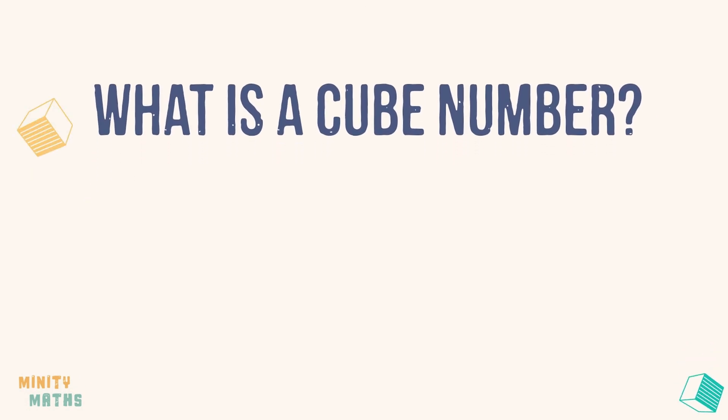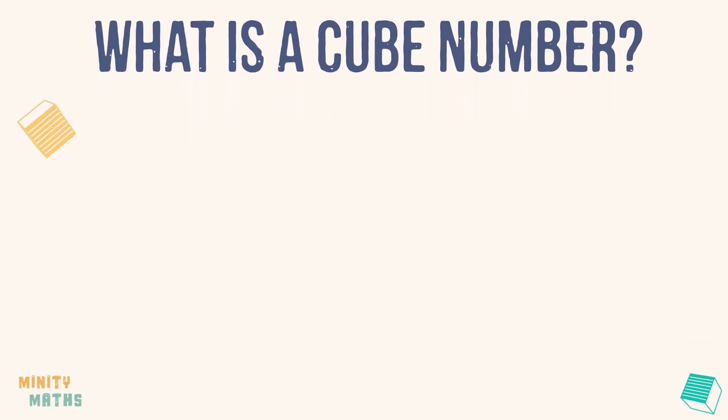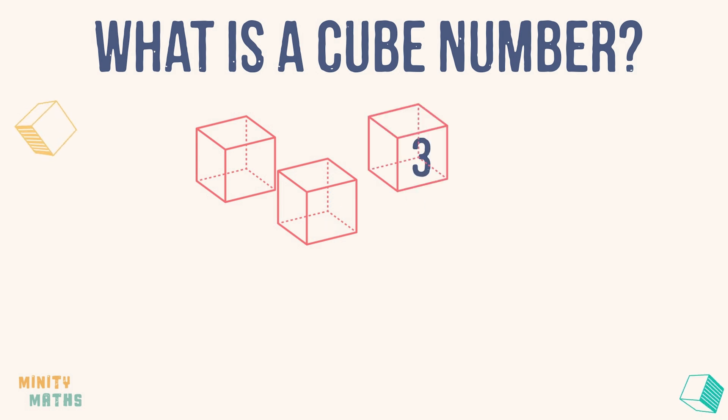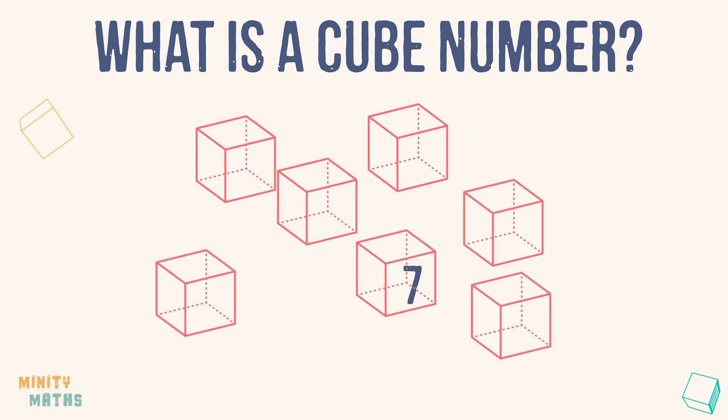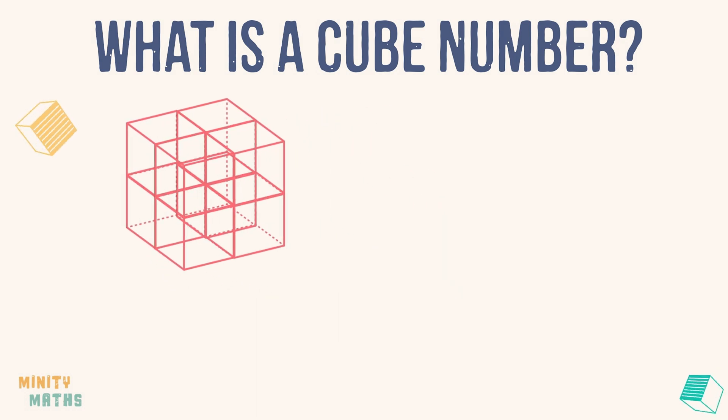A cube number is a number that can be made into a cube using that same number of smaller cubes. Let's look at this example. Here we have 8 small cubes. We can arrange these smaller cubes to make a larger cube.